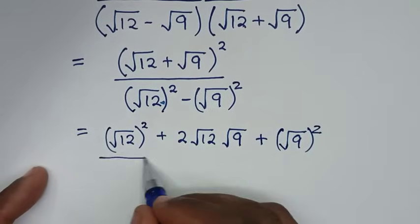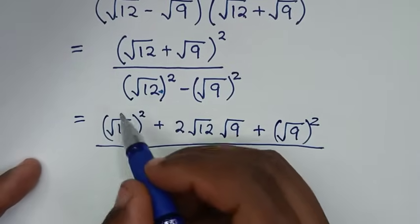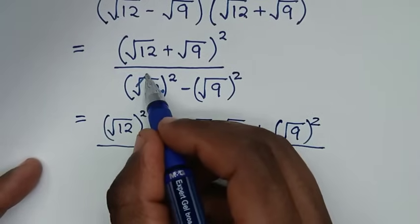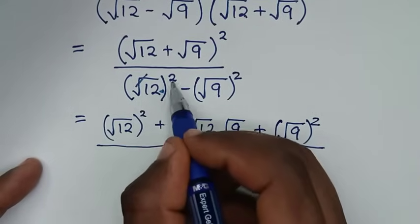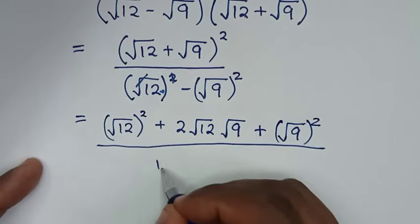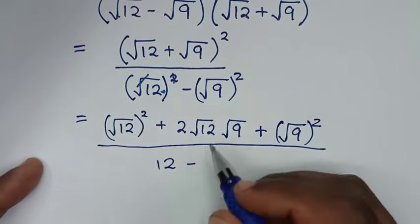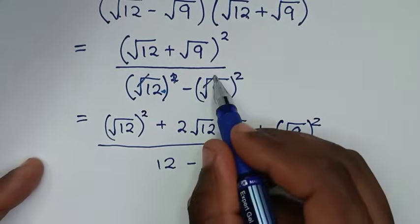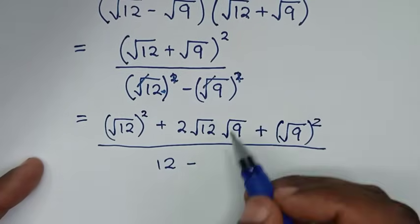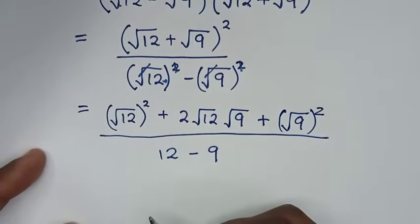In the denominator, the square cancels the square root, so (square root of 12) squared is 12, minus (square root of 9) squared which is 9.